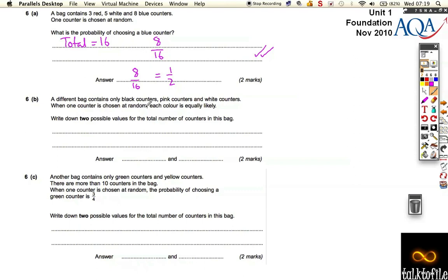Well, if they've got equally likely, you've got to have any multiple of three.